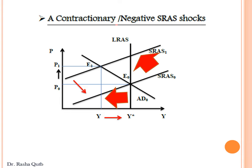The short-run impact of negative SRAS shocks is a recessionary gap with a temporary change in the level of output. With a recessionary gap, demand for resources decreases, so the price of factors of production falls. When prices of factors of production decrease, this causes a rightward shift in SRAS, and the gap is eliminated in the long run.